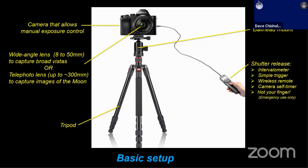In lieu of the intervalometer, you can also use just a simple trigger, also readily available. This is basically an on and off button, meaning you'll have to click the button on the trigger release for every image you want to take. You can also get wireless remotes for your camera. You can even use your camera self timer, though that's a little more awkward because you're going to wind up having to touch your camera to reset the timer for each image. And the last option is your finger — for emergency use only, because you really don't want to jiggle your image.